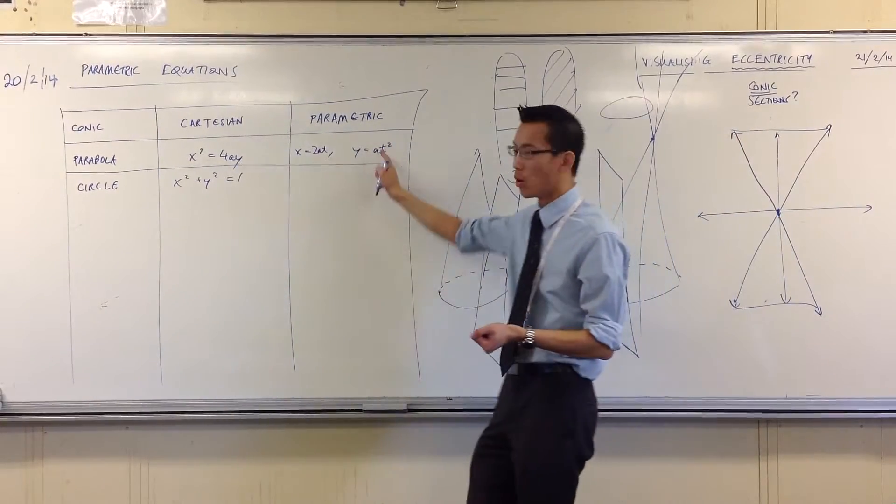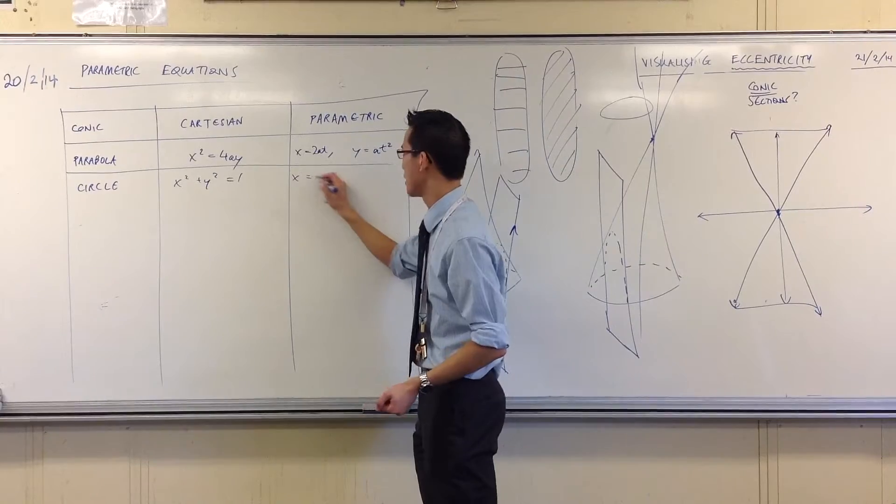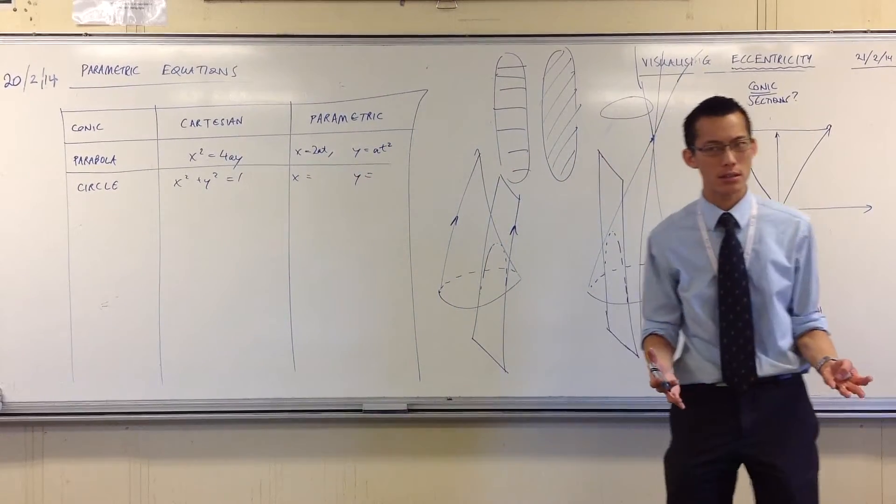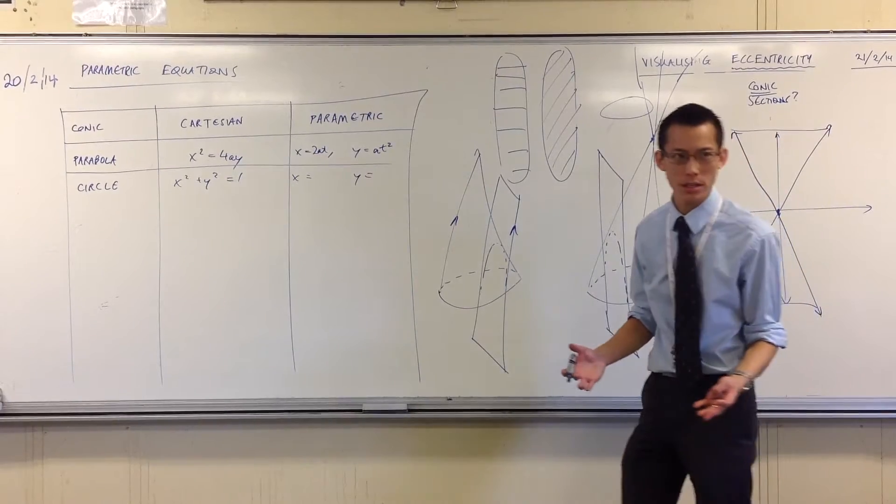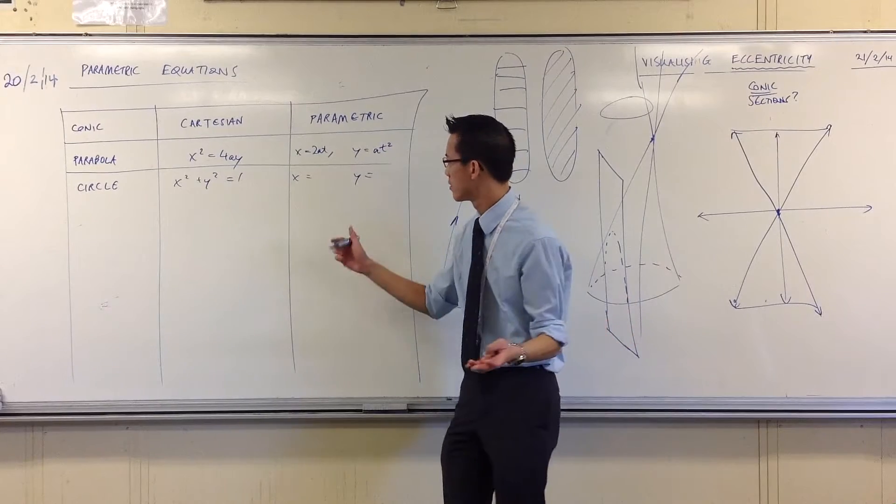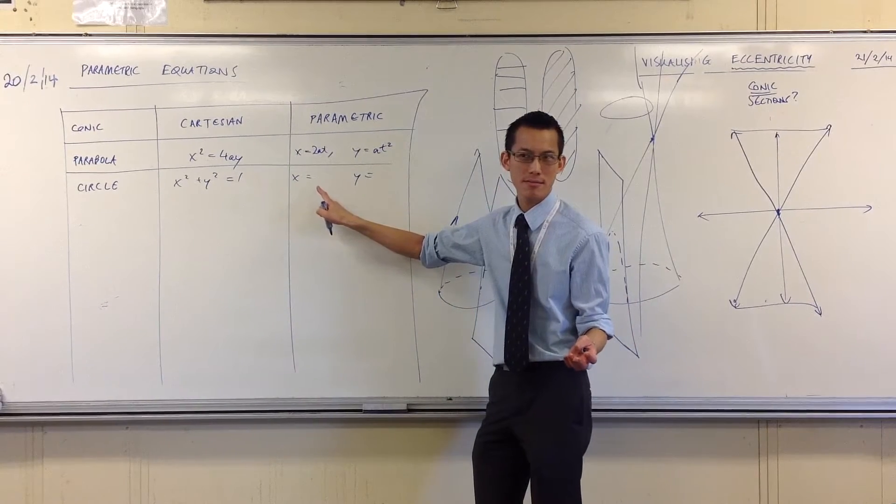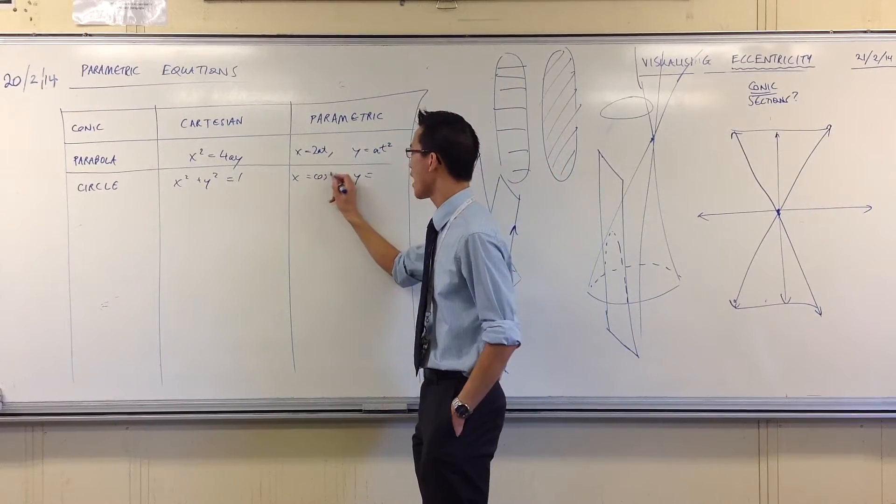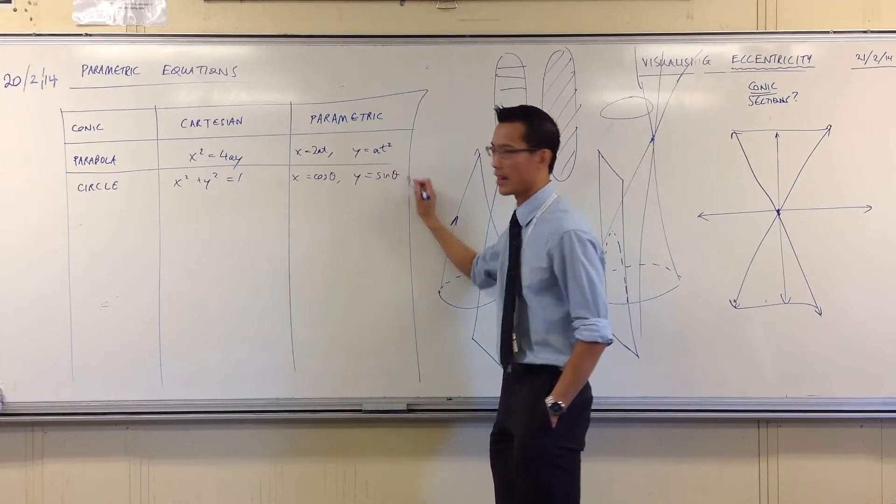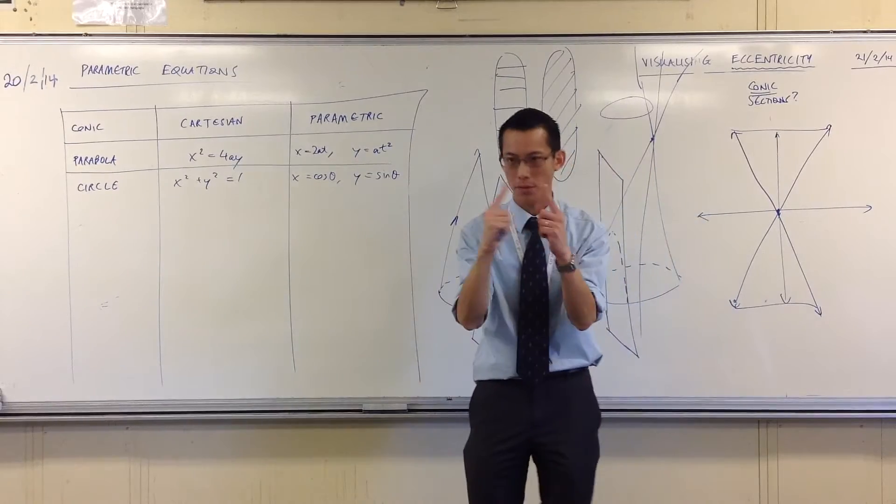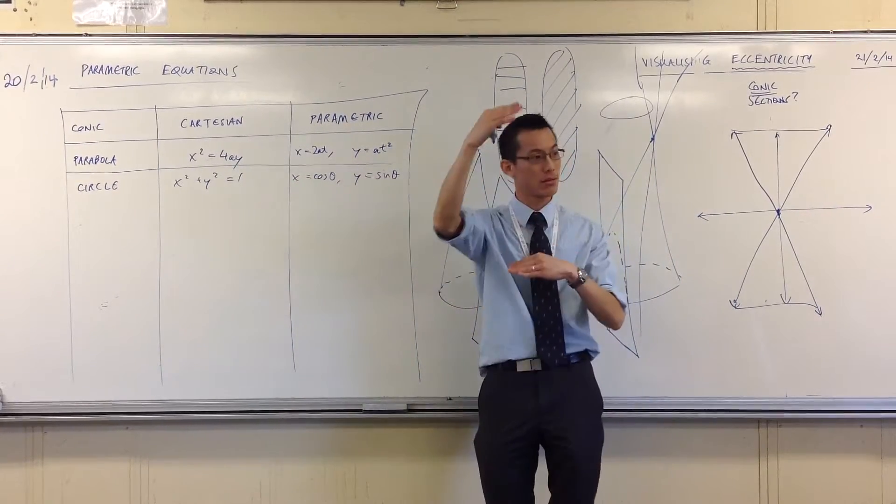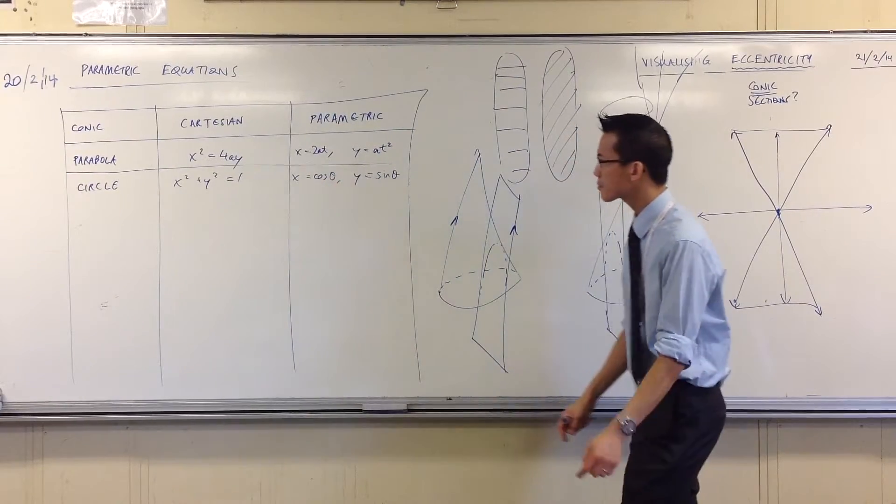x squared plus y squared equals 1. It also has a pair of equations that define its x values and its y values. What were the coordinates? It was a trig thing, wasn't it? Cos. Now, it's sine and cos, but which one's which? X is cos. And the way I remember it is it's alphabetical. And that makes y sine. And, of course, you can draw the unit circle for yourself. And you'll see cos refers to that horizontal distance, hence x. And sine refers to the vertical distance. That's y.